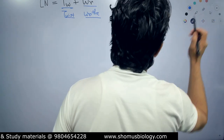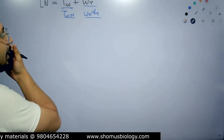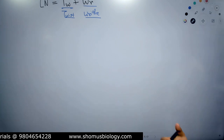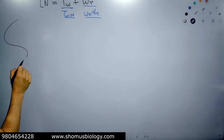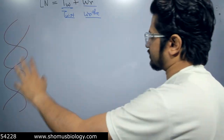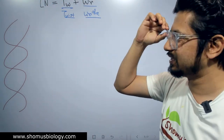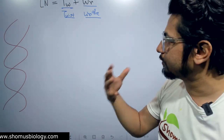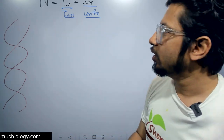Now what do we mean by twist and writhe? To understand these components, we need to see the structure of the DNA. We know that DNA is a helical structure. When we draw a segment of DNA in a straight helix, that is just one segment. But when we are talking about the linking number, we are talking about a covalently closed circular DNA.